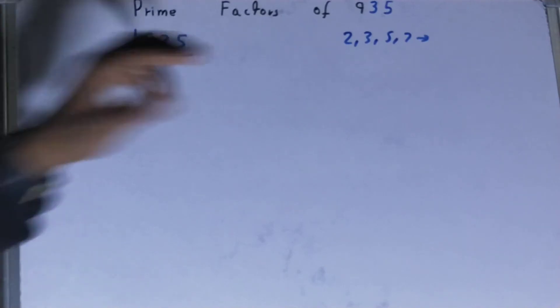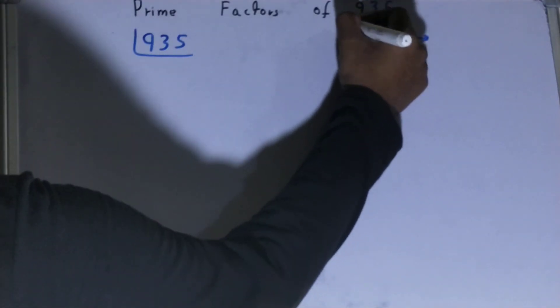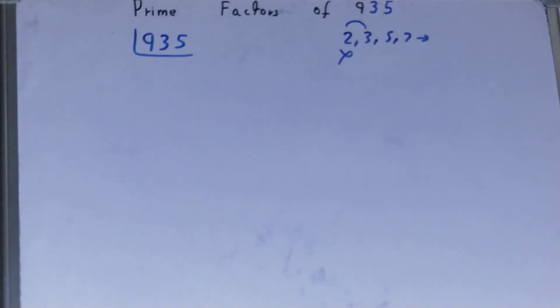That is 2. Is the number 935 divided by 2? Clearly not, because 935 is an odd number. So we'll be going to the next lowest prime number, that is 3. Is 935 divisible by 3?